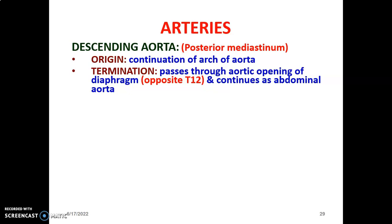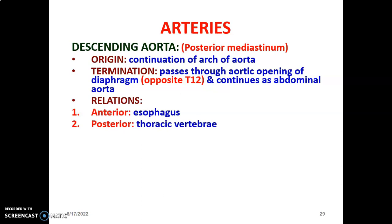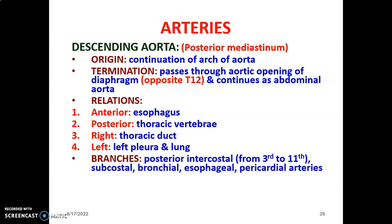After the thoracic aorta passes through the aortic opening of the diaphragm, it continues as the abdominal aorta, which terminates at the L4-L5 junction by dividing into the right and left common iliac arteries. The relations of the descending aorta: anteriorly is the esophagus, posteriorly is the thoracic vertebra, to the right is the thoracic duct, and to the left is the left pleura and lung. The branches of the thoracic aorta include posterior intercostal arteries from the third to eleventh intercostal spaces, subcostal arteries, bronchial arteries to the lungs, esophageal arteries, and pericardial arteries.